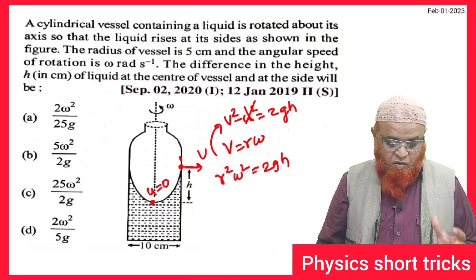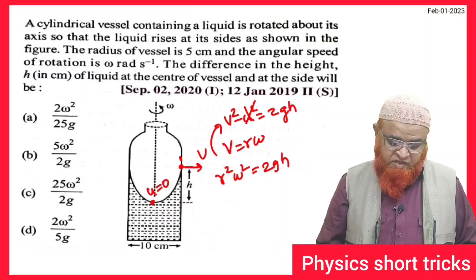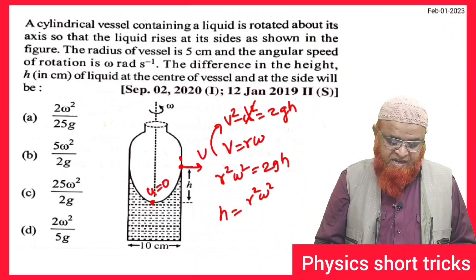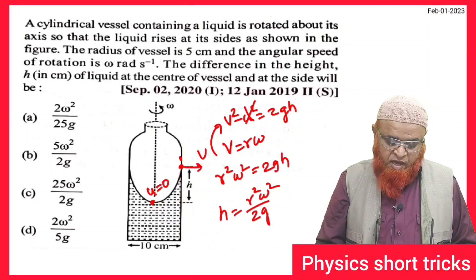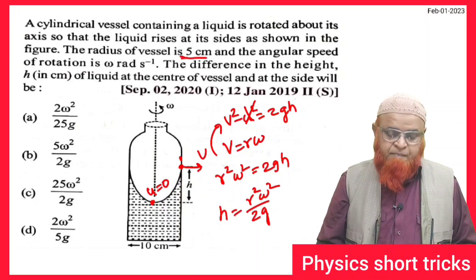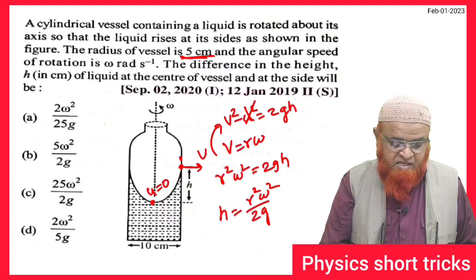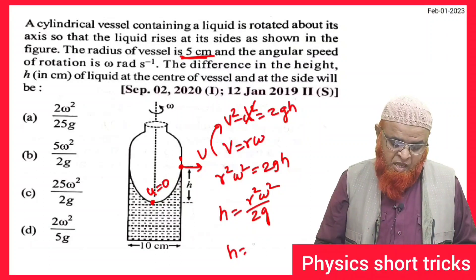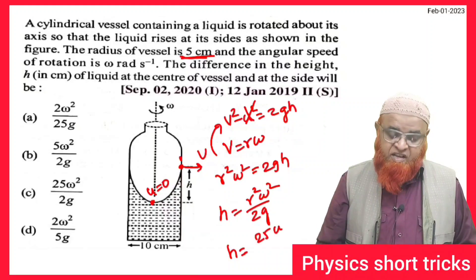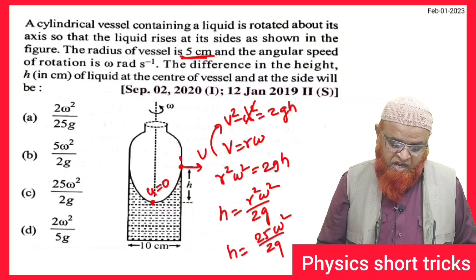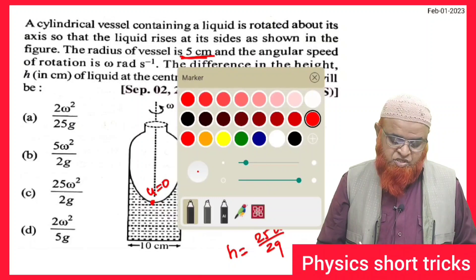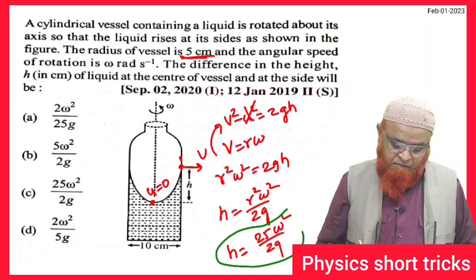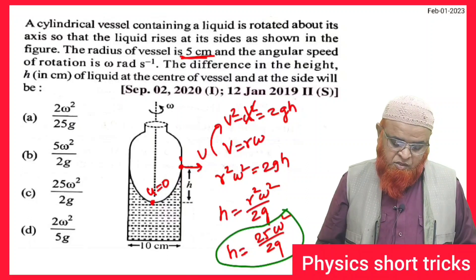In this way, you can find out the height difference of the liquid at the bottom as well as the top. You can write h = r²ω²/2g. In the problem, if you observe, the radius is taken as 5 centimeters. You can write directly h = 5×5, that is 25, so 25ω²/2g. This is going to be your today's shortcut formula which I have discussed here.